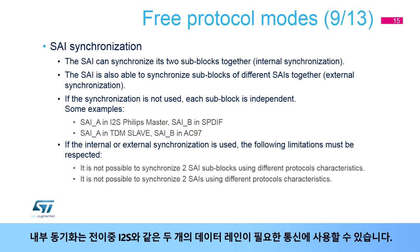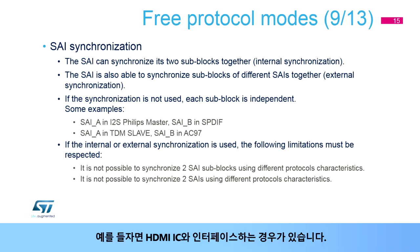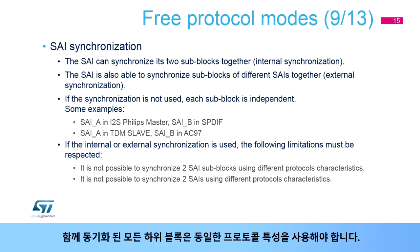The internal synchronization can be used for communications needing two data lanes, such as full-duplex I2S. The external synchronization can be used for communications needing more than two data lines, up to four, for example when interfacing HDMI ICs. All sub-blocks synchronized together must use the same protocol characteristics.